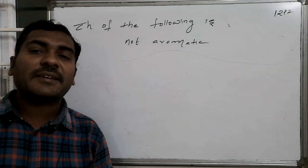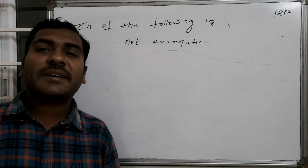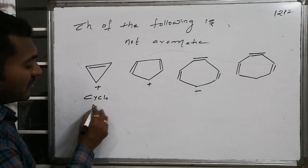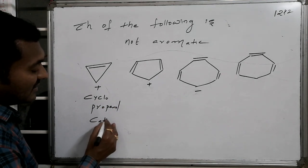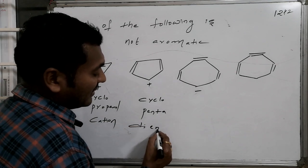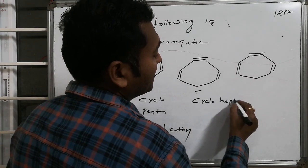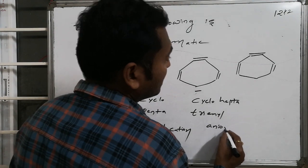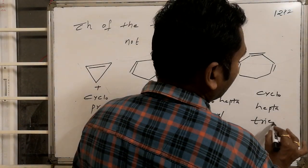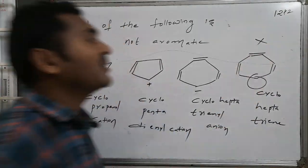The next question asks: which of the following is not aromatic in nature? The options are: cyclopropenyl cation, cyclopentadienyl cation, cycloheptadienyl cation (cycloheptatrienyl), and a corresponding anion. Planarity is a key criterion — the cycloheptadienyl anion does not maintain planarity and therefore is not aromatic.